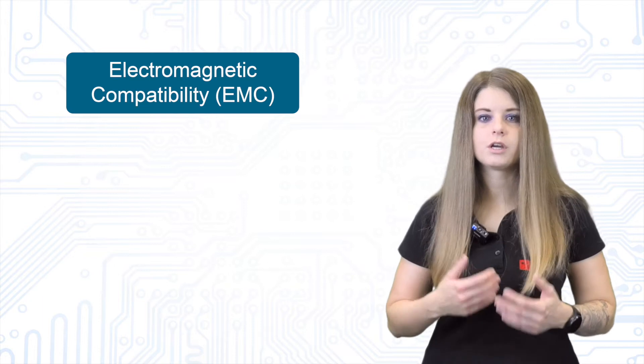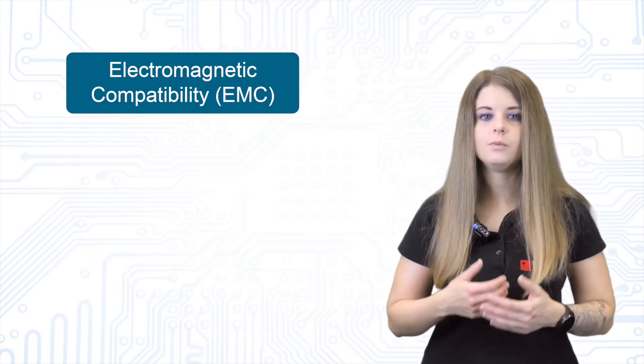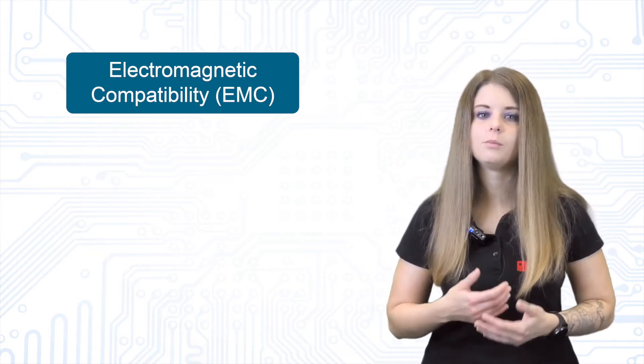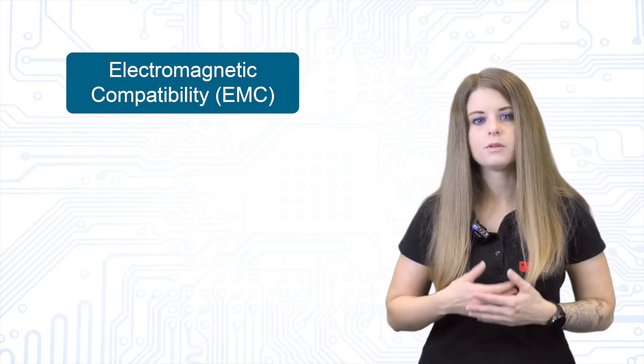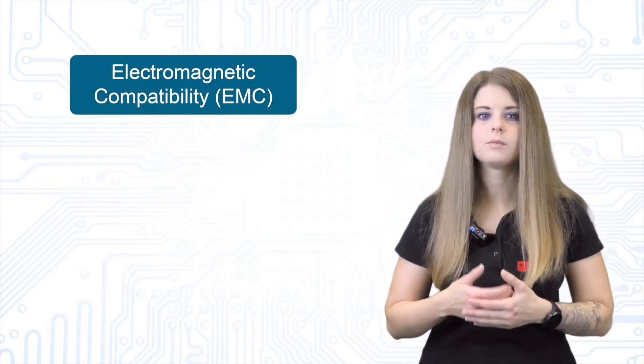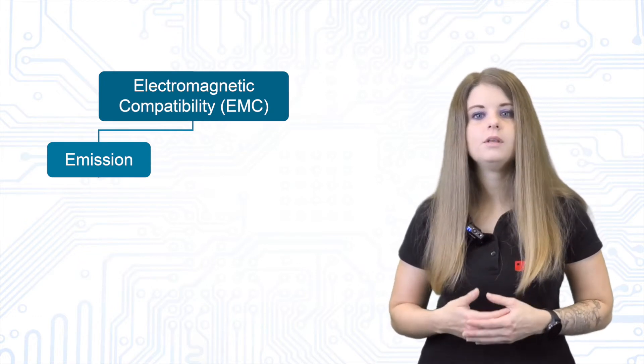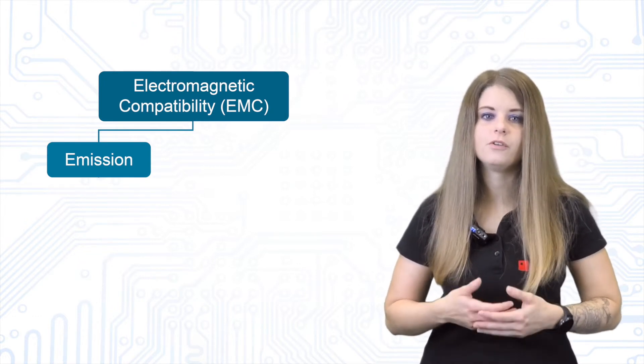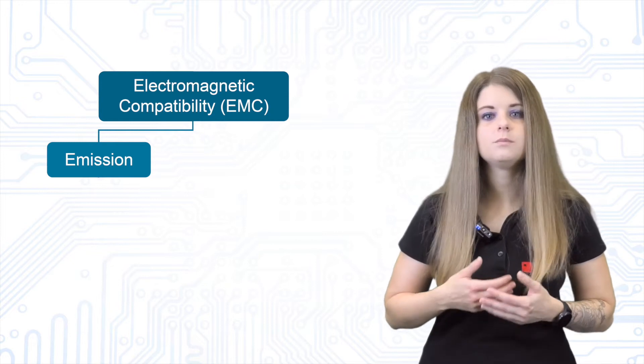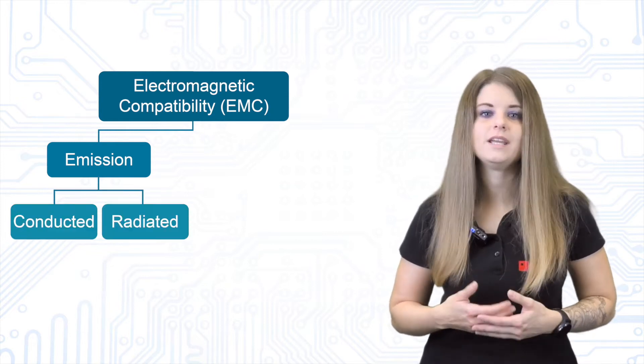There are two properties which a device must fulfill to make it electromagnetically compatible. The first property tells us something about the electromagnetic emission of a device and must be below a defined limit depending on which type of device is considered. These emissions could be conducted or radiated.